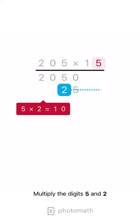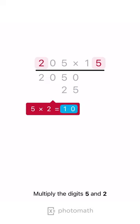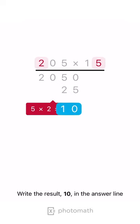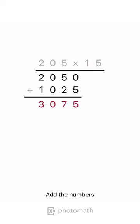Multiply the digits 5 and 2. Write the result, 10, in the answer line. Add the numbers. The result is 3075.